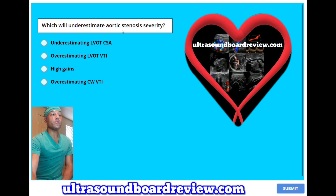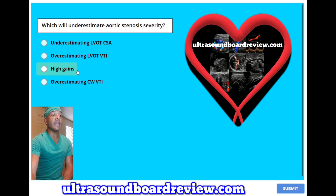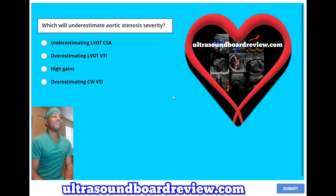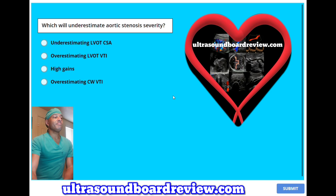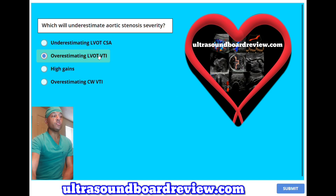Which will underestimate aortic stenosis severity? A, underestimating LVOT cross-sectional area; B, overestimating LVOT VTI; C, high gains; or D, overestimating continuous wave Doppler VTI? The answer is B, overestimating the LVOT VTI.